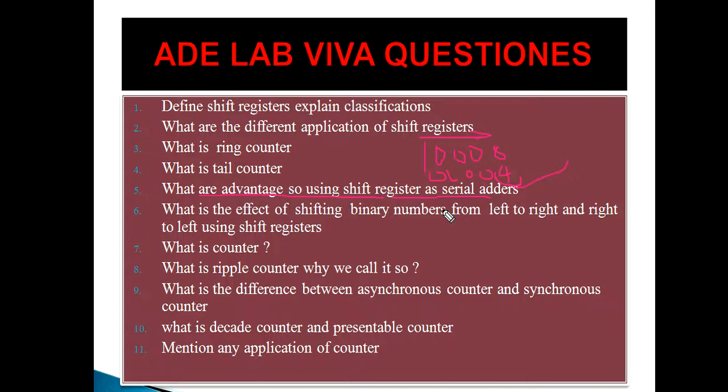What is a decade counter and what is a presetable counter? A decade counter is a counter which counts from 0 to 9. In the lab you have used the 7490, which is a decade counter IC. A presetable counter is a counter which you can set to a particular value, and it will start and return from that value. One important application of the counter is a digital clock.